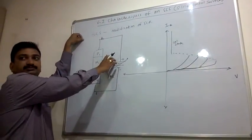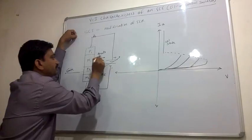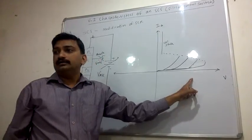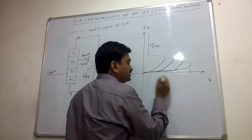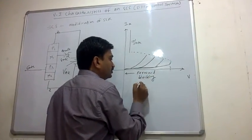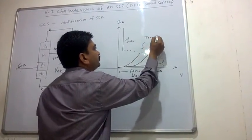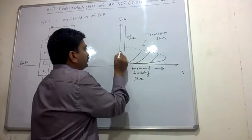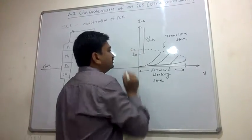The function of the anode gate is that you can turn on the SCS by providing a negative pulse to it, and you will get the same type of characteristics as for SCR — a forward blocking state, a transition state, and an on state. The holding current is IH and the latching current is IL.